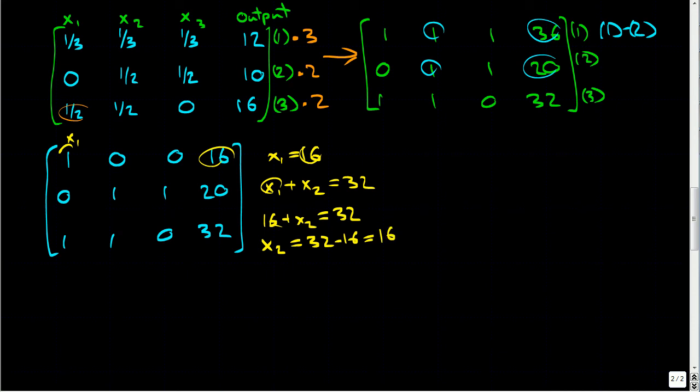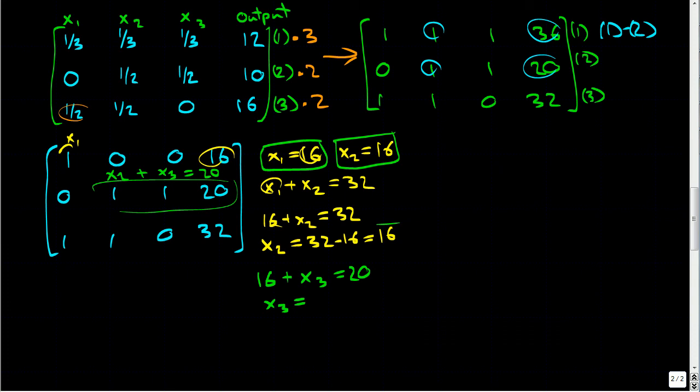So now we know that x1 equals sixteen and x2 equals sixteen. So from this system of equations, we know that we have x2 plus x3 equals twenty. And since x2 equals sixteen, that means we have sixteen plus x3 equals twenty, which means that x3 equals four.